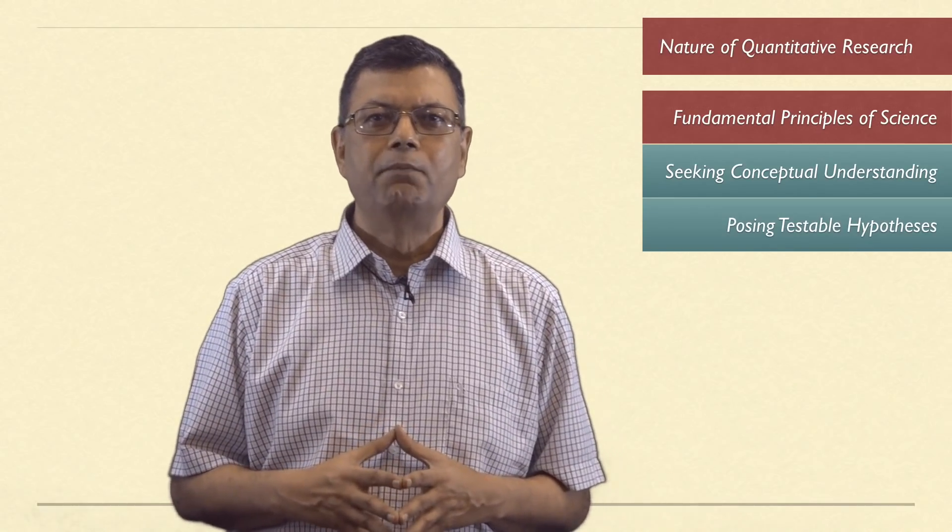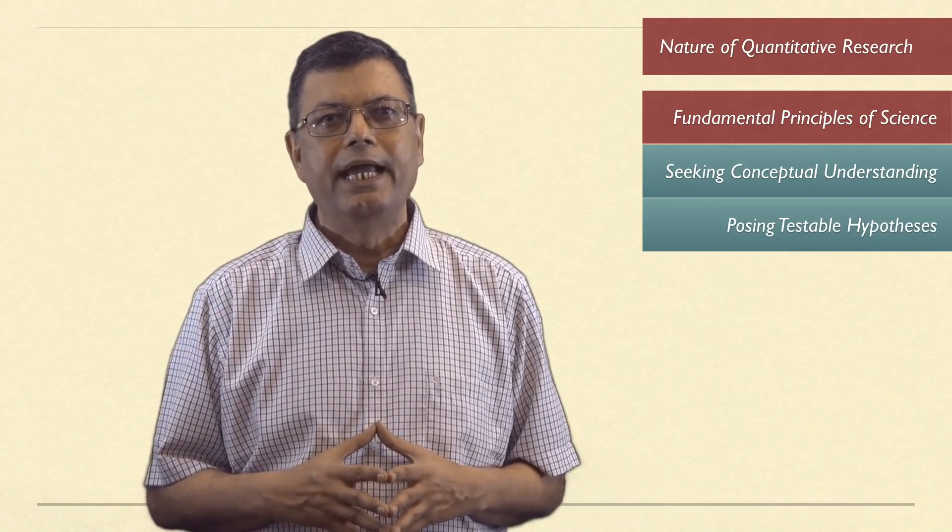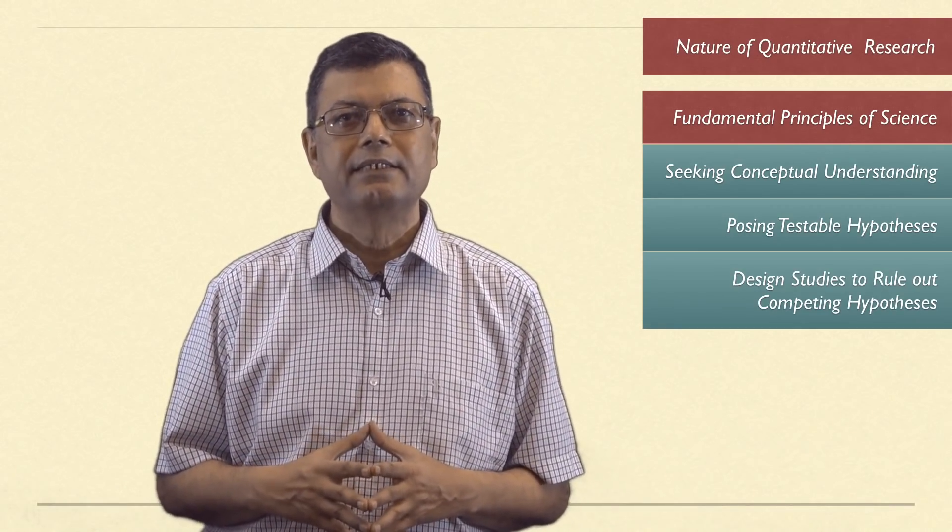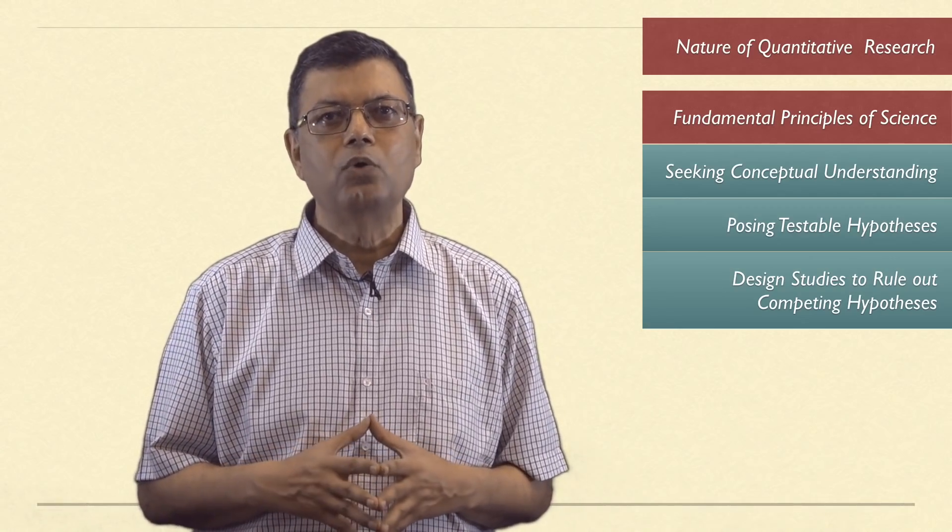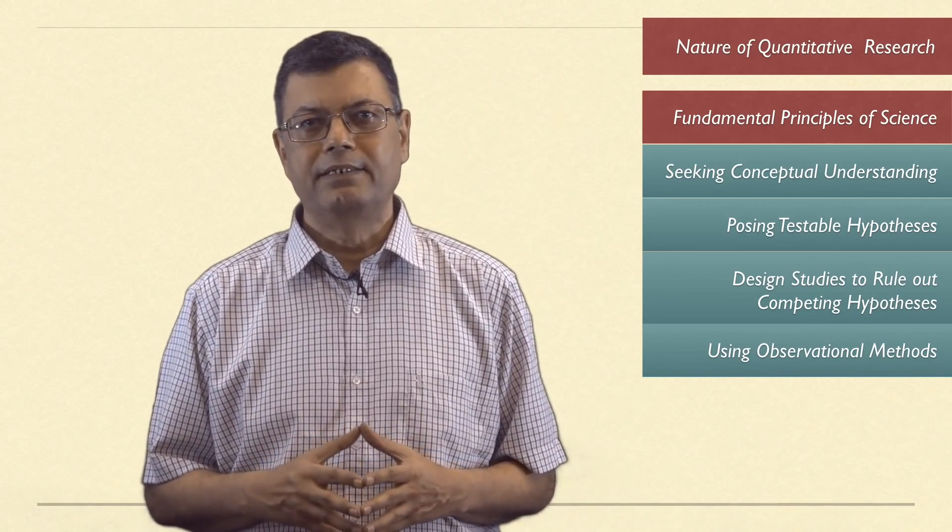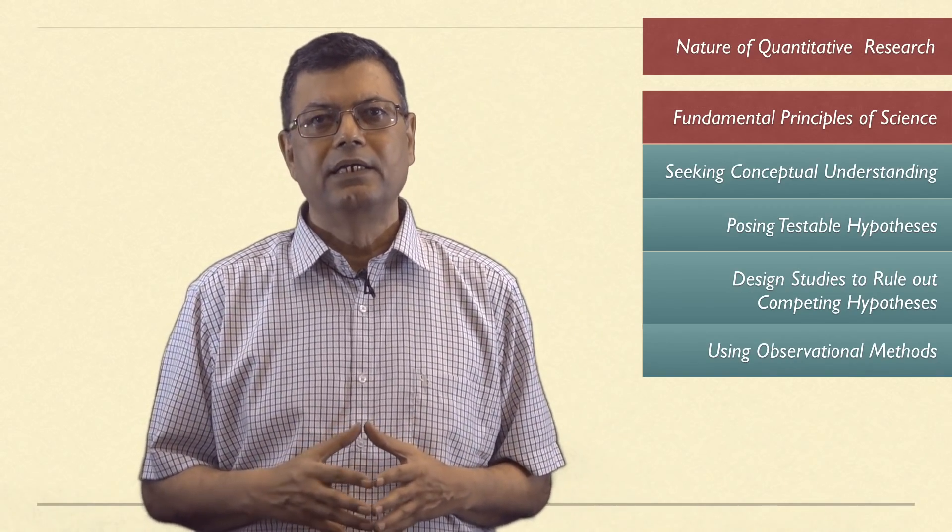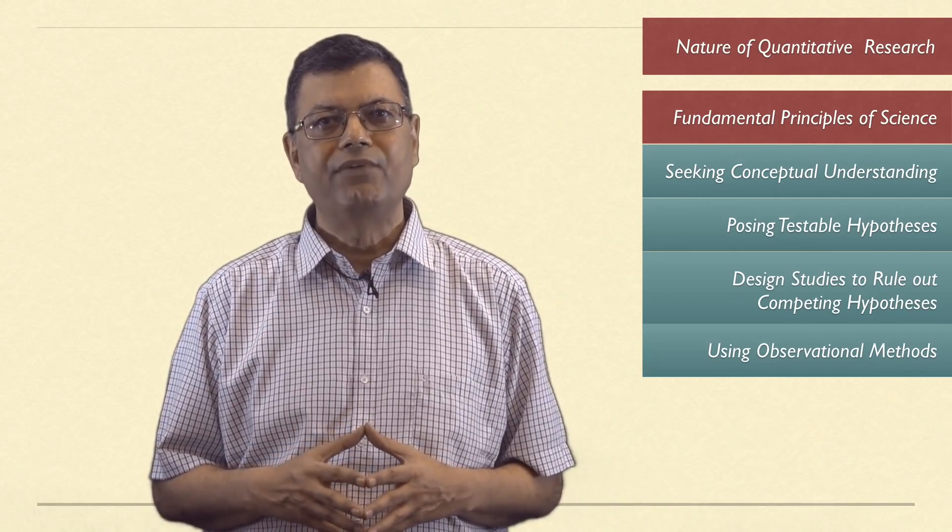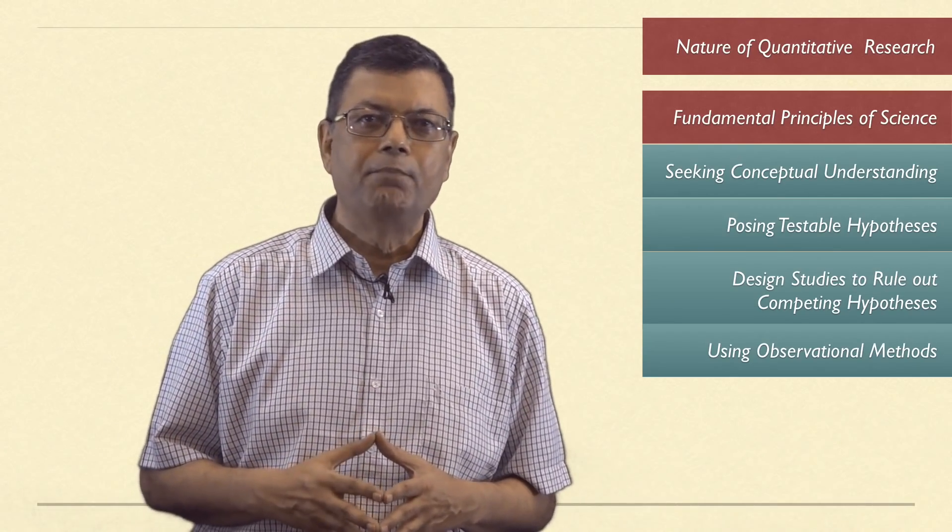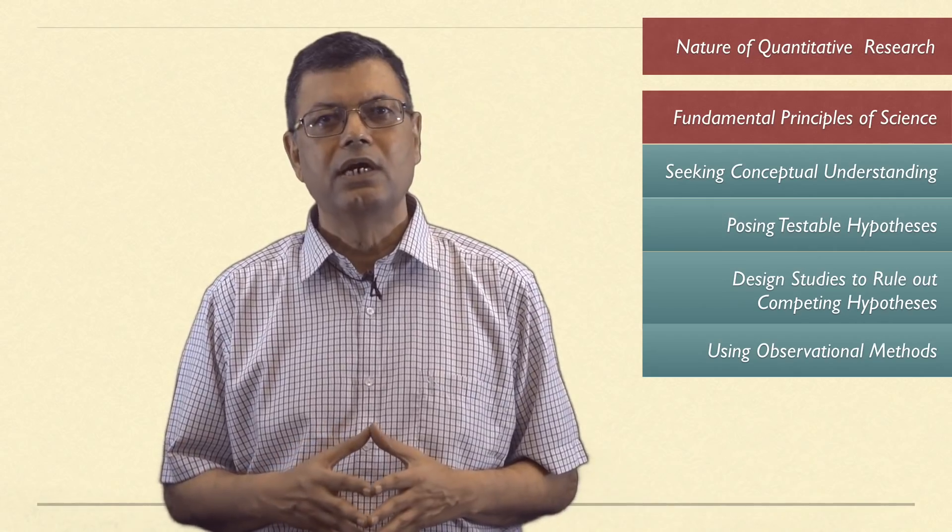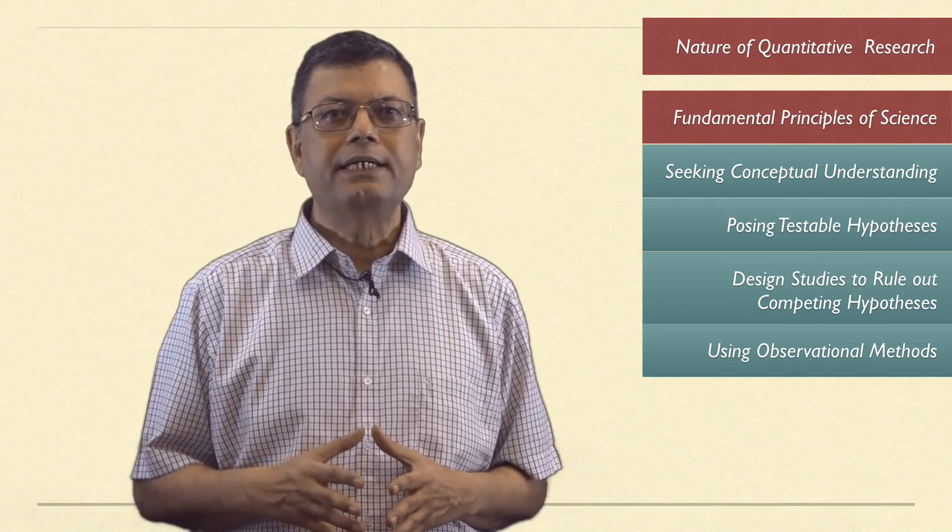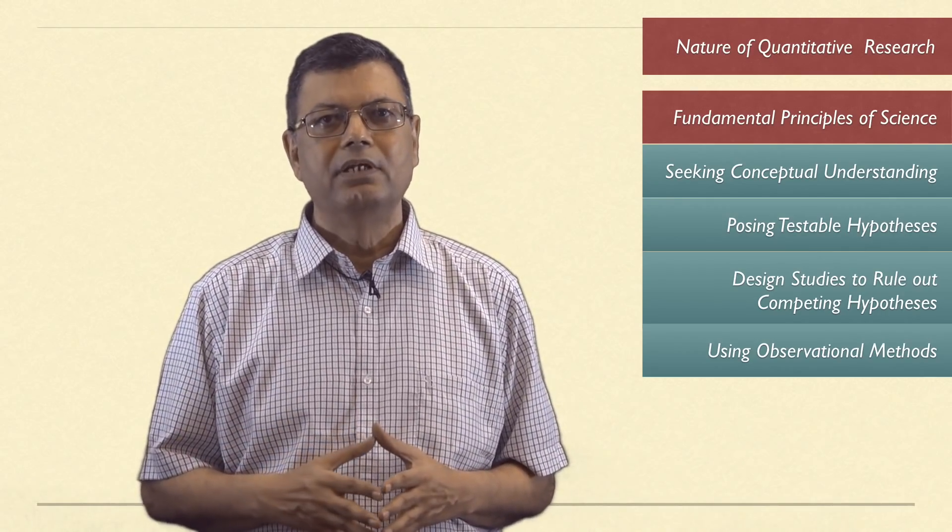The second principle is posing empirically testable and refutable hypothesis. Third principle is designing studies that test and can rule out competing counter-hypothesis. Fourthly, using observational methods linked to theory that enable other scientists to verify their accuracy. And the final principle is recognizing the importance of both independent replication and generalization. That is to say, study should be testable, verifiable and replicable.